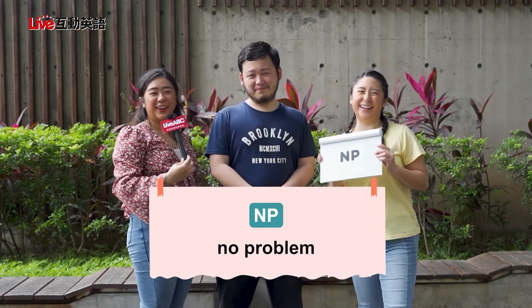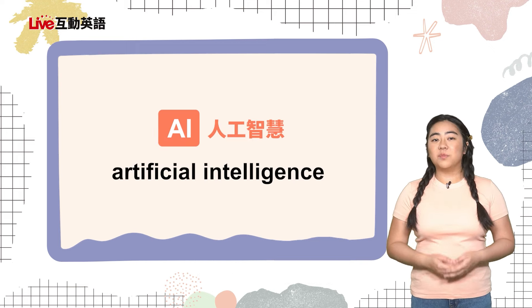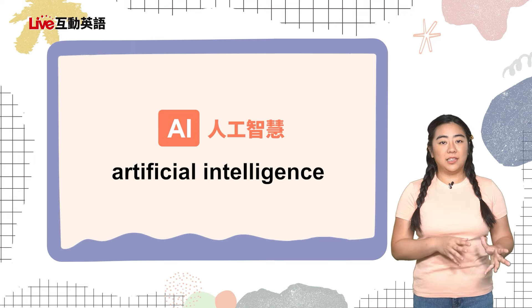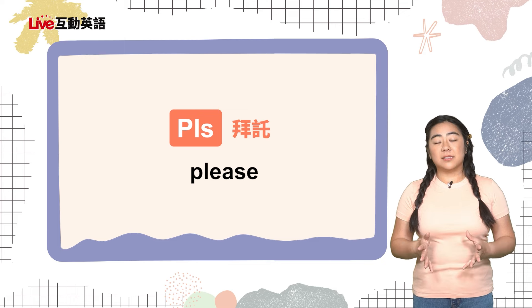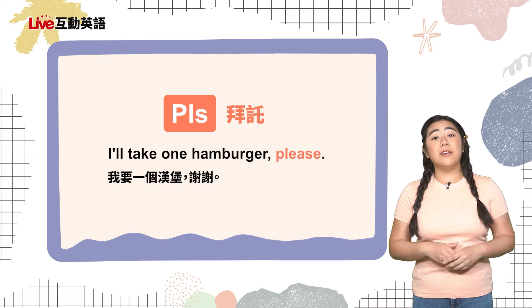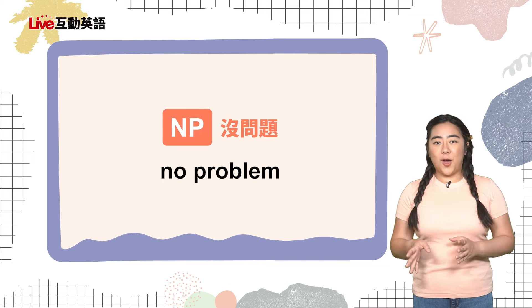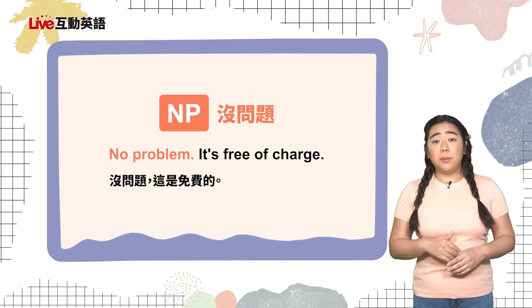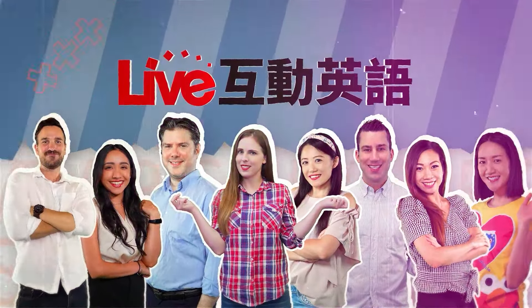And our last one — NP? 'No please? No photo? No pressure?' No problem! Very good! So what did we learn today? AI stands for artificial intelligence — for example, ChatGPT is a great artificial intelligence tool. PLS stands for Please — usually shorthand when we text, like 'I'll take one hamburger, please.' NP stands for No Problem — another way of saying 'you're welcome,' as in 'no problem, it's free of charge.' That's all we have for today. Kiwi later! Bye!